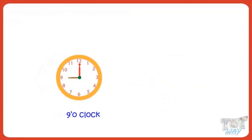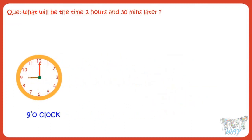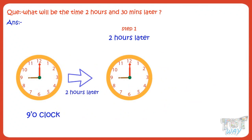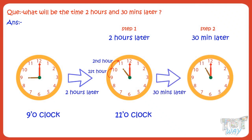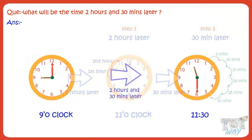Now, what will be the time 2 hours and 30 minutes later? Let's first calculate the time after 2 hours — hop the hour hand 2 times and you will get 11 o'clock. Now calculate the time after 30 minutes: hop the minute hand 6 times. As we know, 5 minutes pass when the minute hand moves from one number to the other. So this way we get 11:30 on the clock.